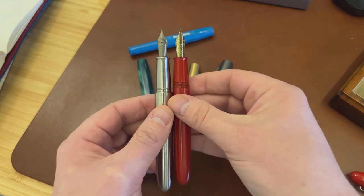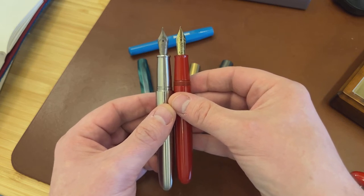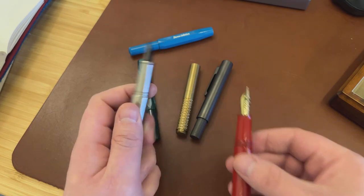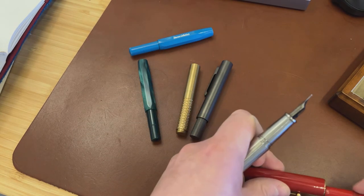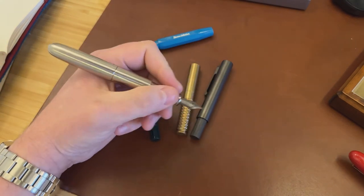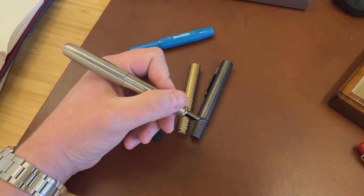It compares very favourably to this Namiki Urushi 20. It's a long, beautifully curved section with the threads set very far back. And what that means is, in the hand, actually this feels like a big pen. Not even like a pocket pen with the cap posted. It feels like a proper big pen.